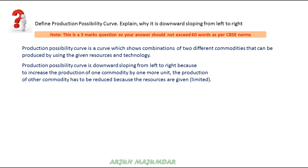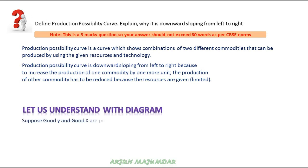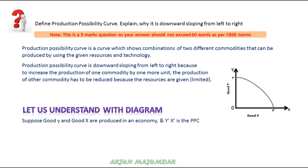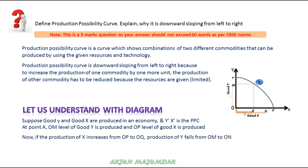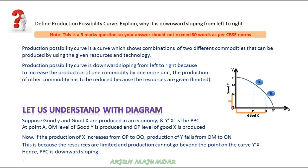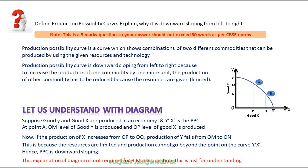Just for understanding: good Y is shown on the Y-axis and good X is shown on the X-axis. The PPC curve is plotted. At point A, the production of good Y is at level OM, and at point B, the level of good X increases. So as per the graph, to increase production of good X, we have to reduce production of good Y — which confirms why it is downward sloping.